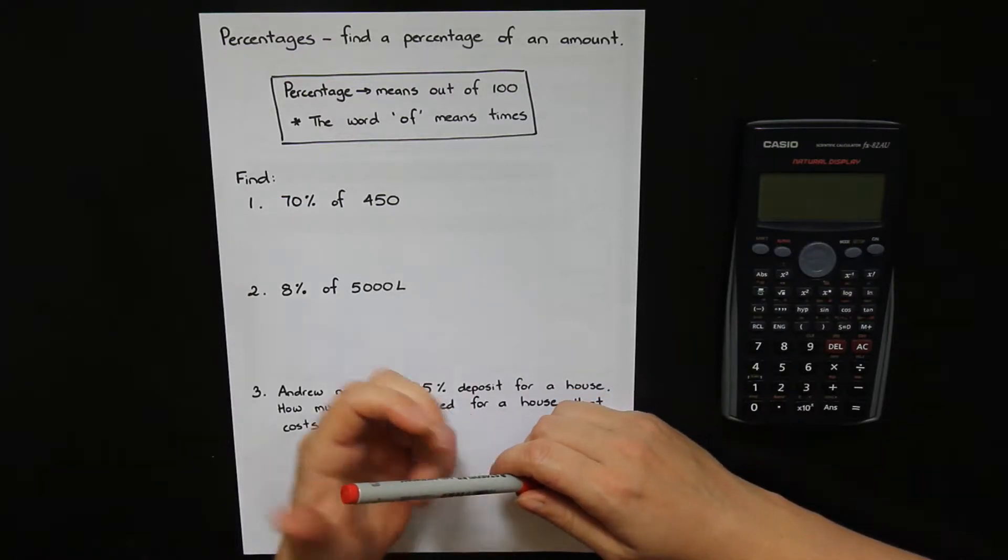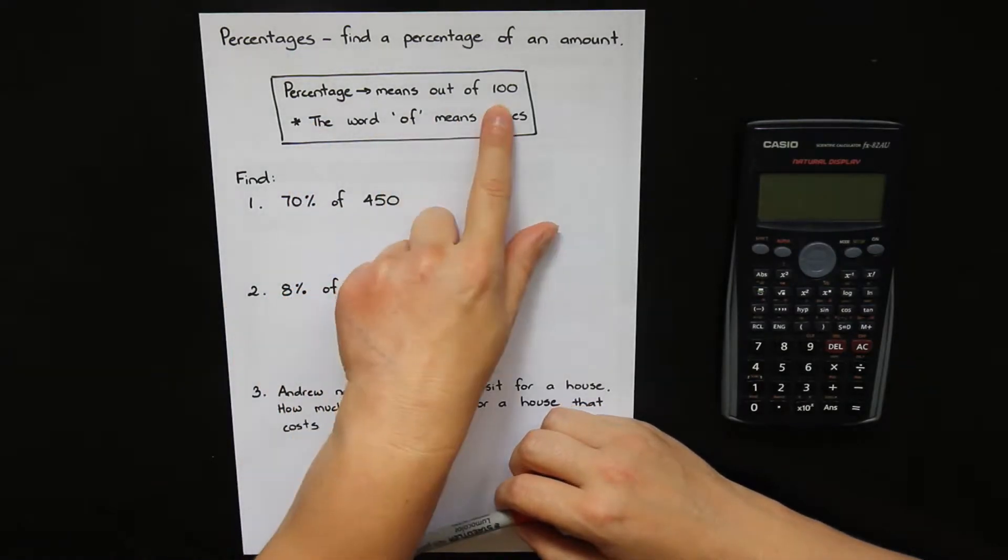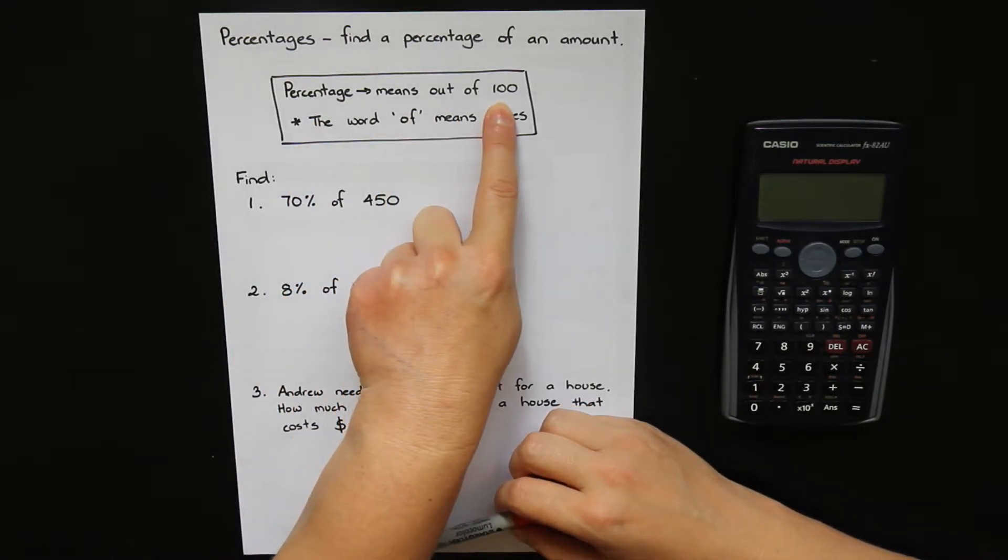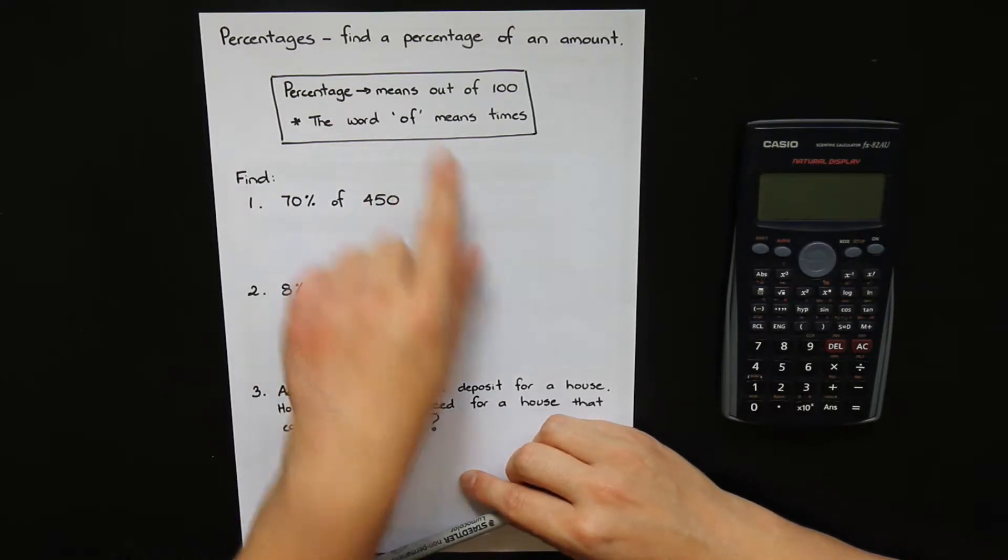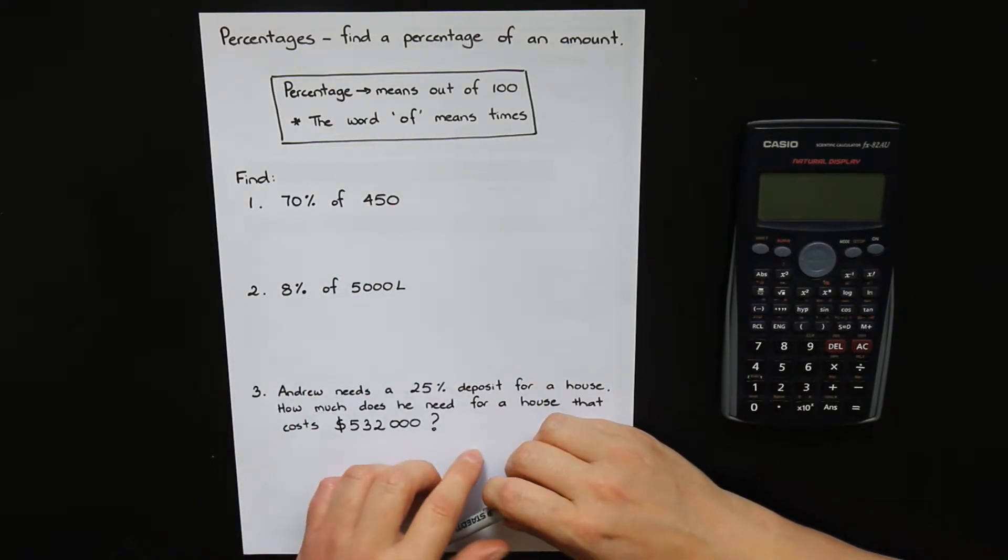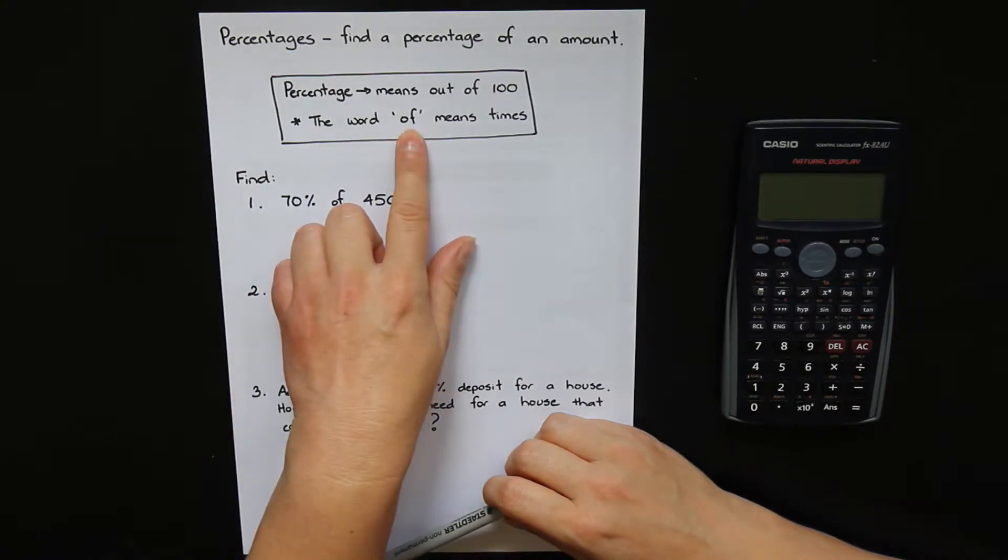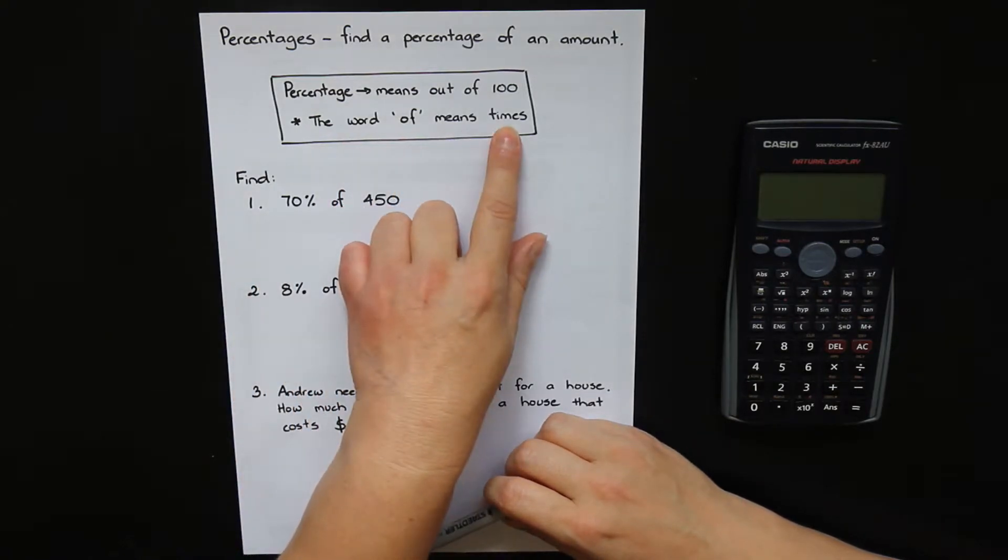So just a reminder from last lesson that a percentage means out of a hundred. And today we're going to be using the word of in a lot of our questions. We want to find a percentage of something. And when we use this word of it means that we want to times.